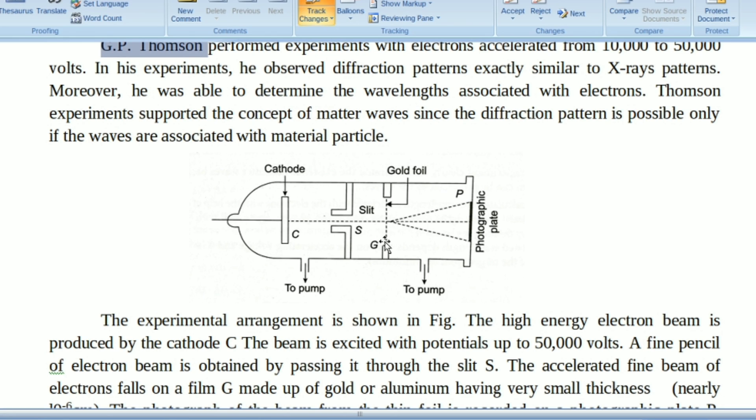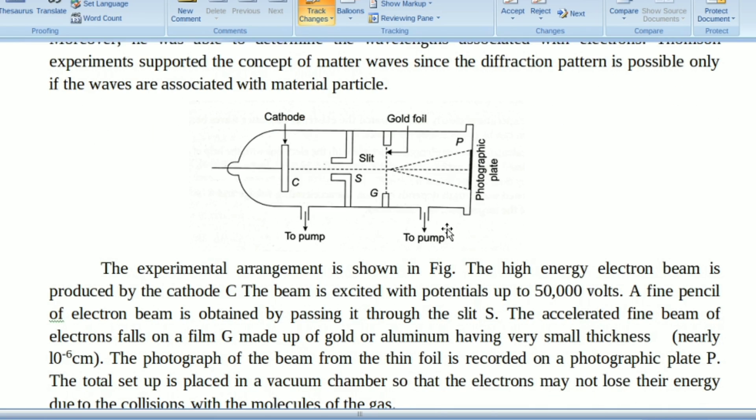The photographic plate records the pattern. When electrons are accelerated from the cathode, the electrons move and touch the surface of the thin film. Then the electrons get diffracted and they move in different paths.